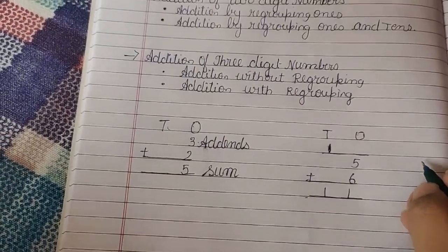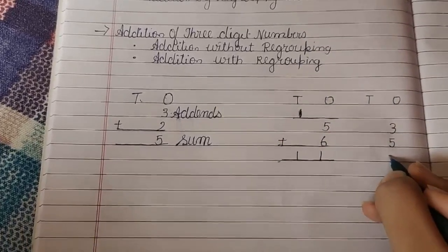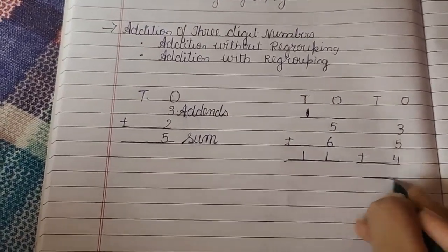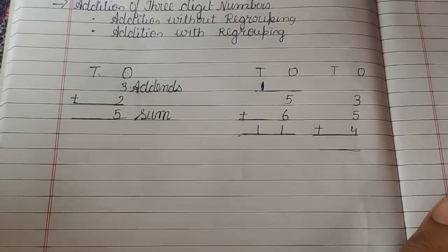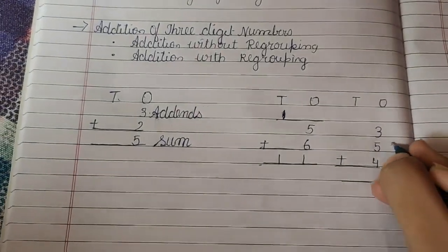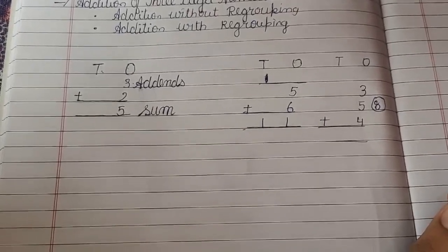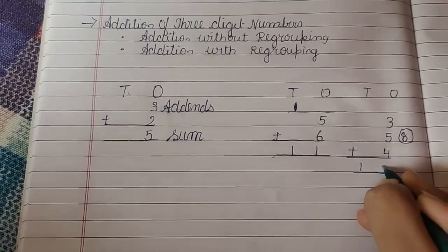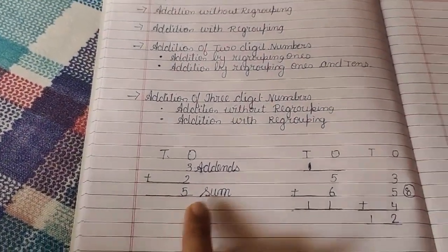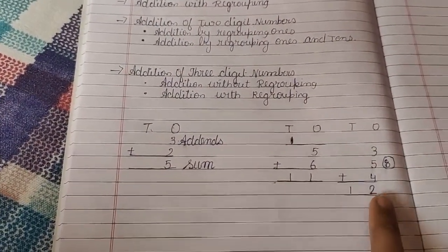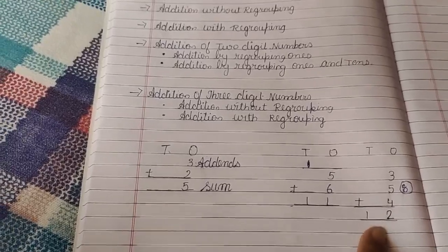Now we will do the sum of 3 addends. Like 3 plus 5 plus 4. This is all just for your understanding. 3 in your mind, 5 on your fingers, which makes 8. And 8 plus 4 — keep 8 in your mind and 4 on your fingers — so 8 plus 4 is 12. So these are sums of 1 digit, addition without regrouping and addition with regrouping.